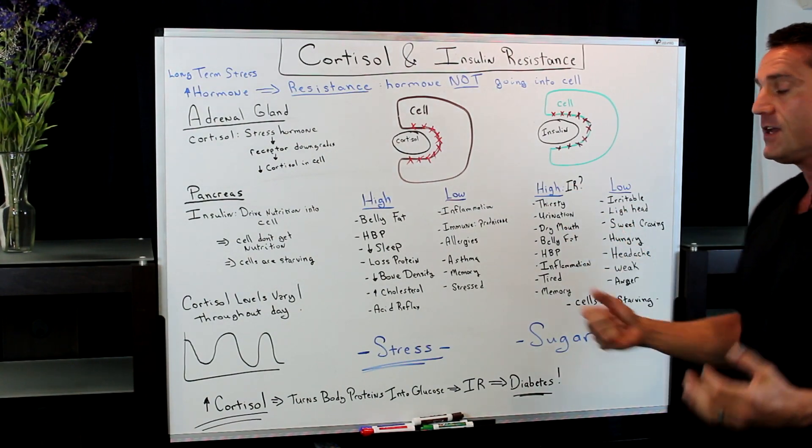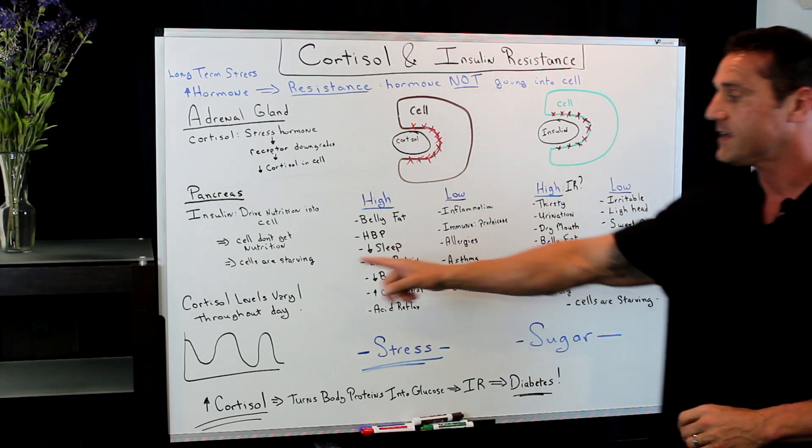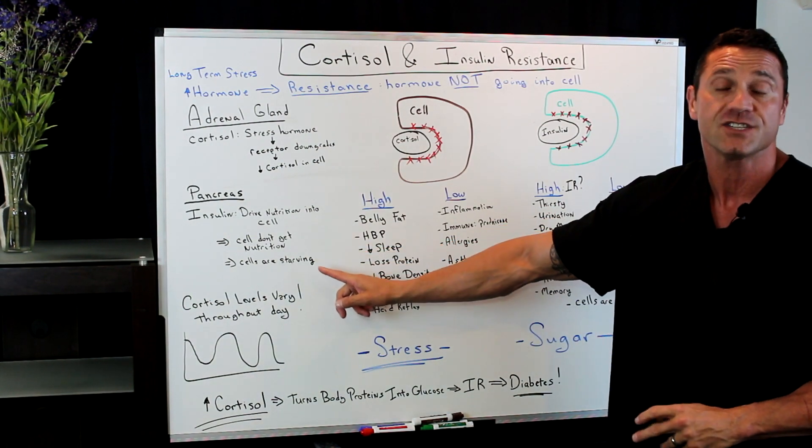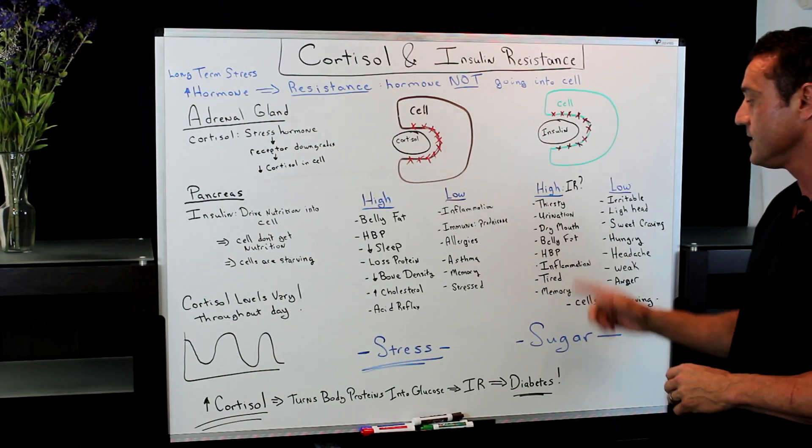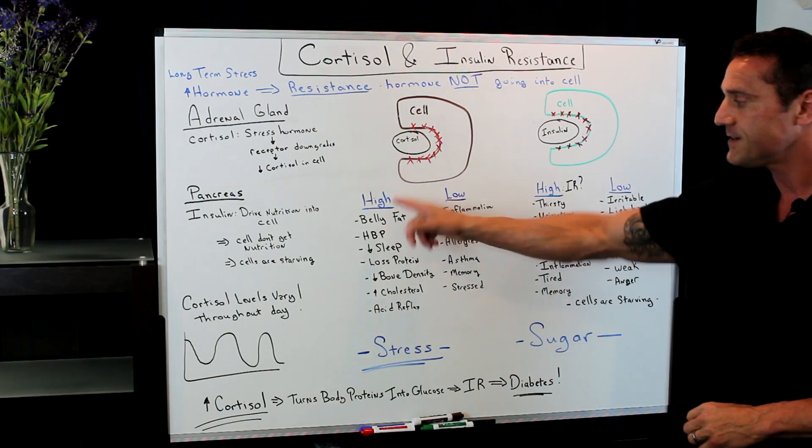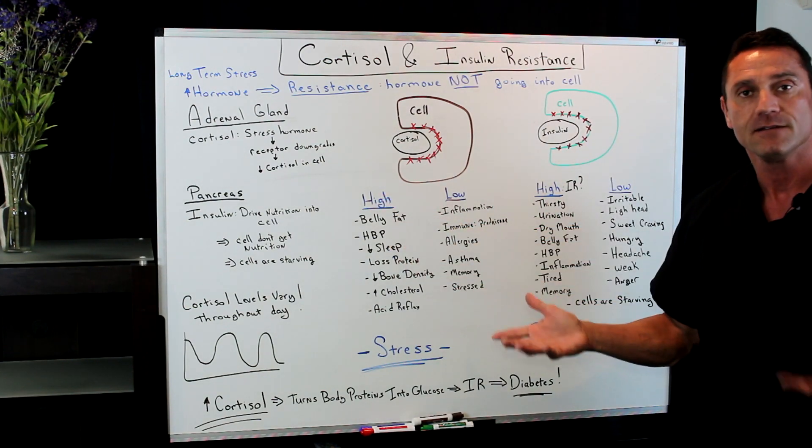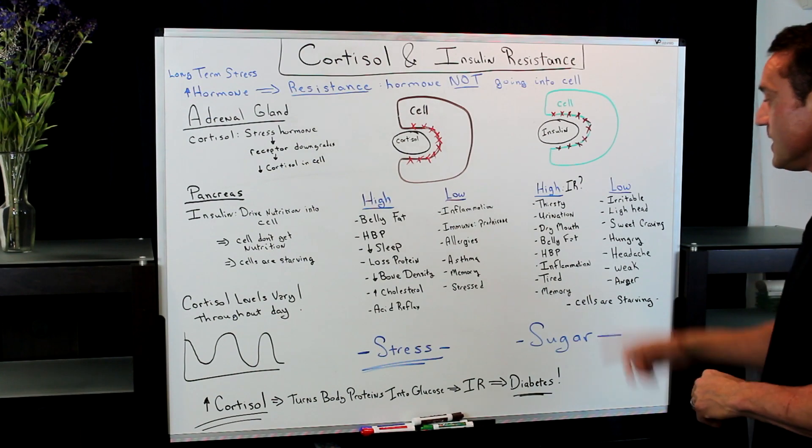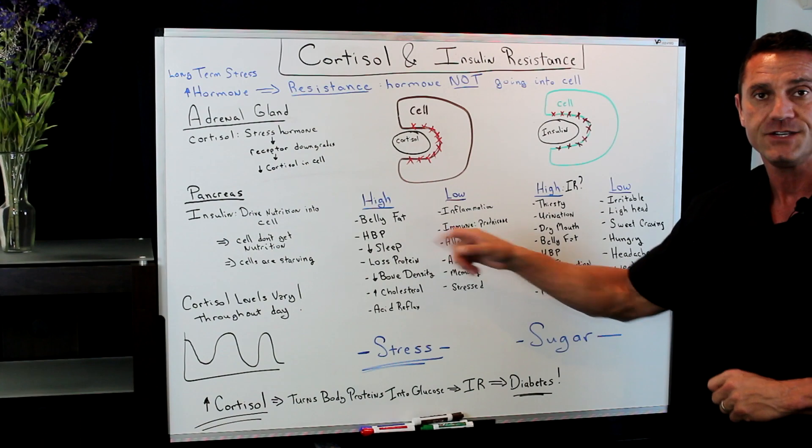With insulin resistance, if you have too much, this is where you're thirsty because the cells aren't getting the nutrition and they're starving. You're thirsty all the time, excessive urination, dry mouth, belly fat. Belly fat with high insulin and belly fat with high cortisol, it's pretty much the same. High blood pressure, inflammation. You're feeling tired all the time.